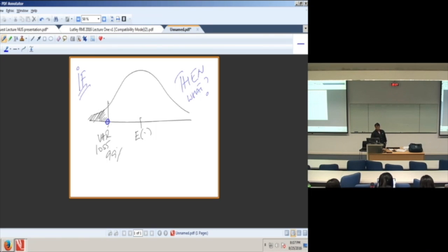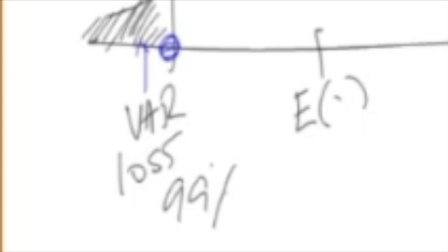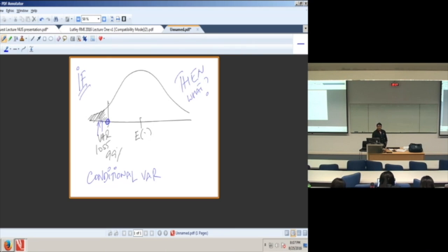Do we expect it to be here, be here, or what? So then you need a measure called a conditional VAR. Conditional VAR tries to give you that answer. What if this happens? I know you're telling me it's unlikely, but let's say it has happened. Then what?